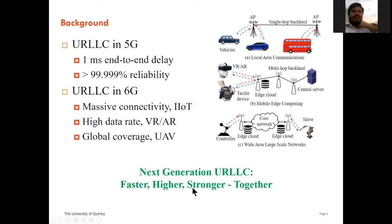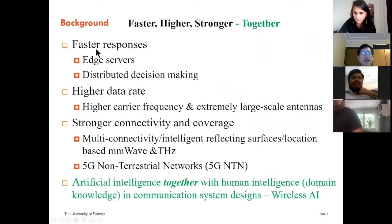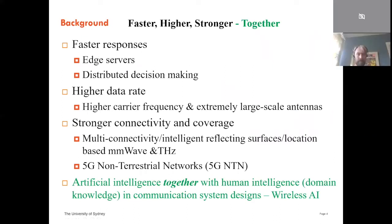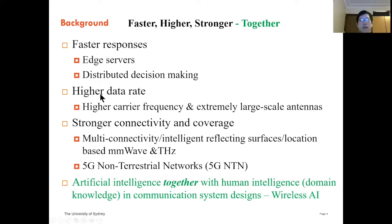In the past three years, we started to try to use advanced machine learning technologies to optimize communication systems to meet these very stringent requirements. I would like to borrow the new Olympic model to characterize the features of the next generation URLLC: faster, higher, stronger, and together. Faster means we need to provide faster responses to end users by using mobile edge computing systems with edge servers, where the whole network makes decisions in a distributed manner, avoiding long propagation delay to the central cloud. High data rate is required for highly interactive VR and AR applications with tactile devices, which may require higher carrier frequency with extremely large-scale antennas.